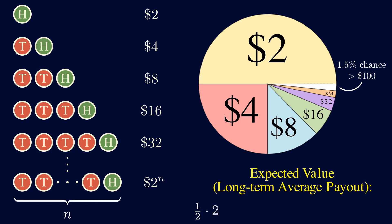There's a 50% chance of winning 2 dollars, plus a quarter chance of winning 4 dollars, plus an eighth chance of winning 8 dollars. And you continue this. You can see that this simplifies to an infinite sequence of 1s.